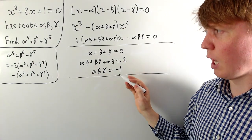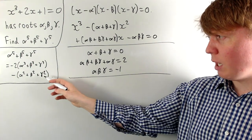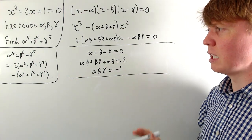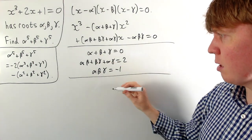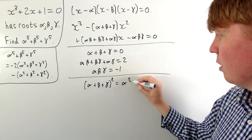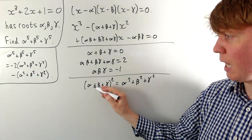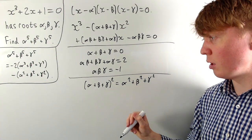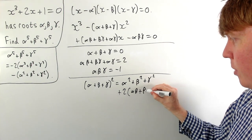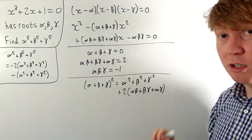To find the sum of squares in terms of known quantities, we square the sum of roots: alpha plus beta plus gamma, all squared, expands to alpha squared plus beta squared plus gamma squared, plus two times alpha beta plus beta gamma plus alpha gamma.